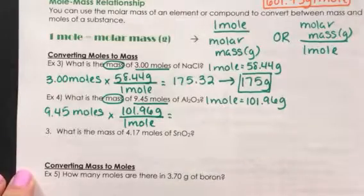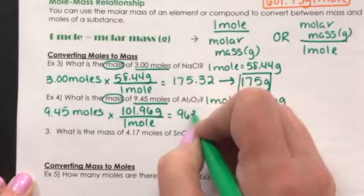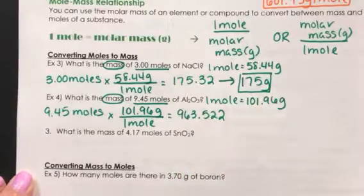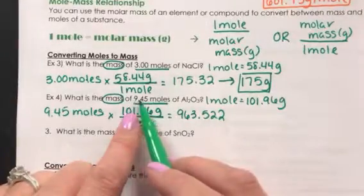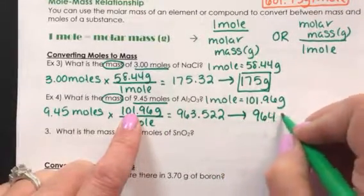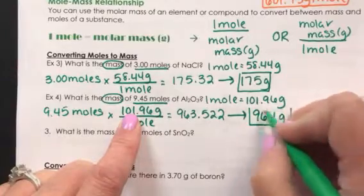When I multiply these two, my calculator reads 963.522. This one's pretty easy. There are one, two, three sig figs in the measurement we're given. So my answer should be rounded to 964 grams.